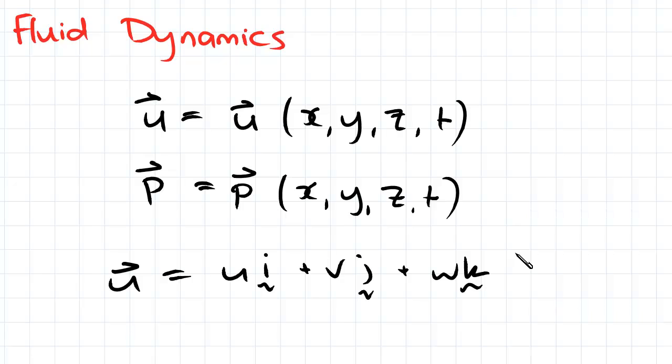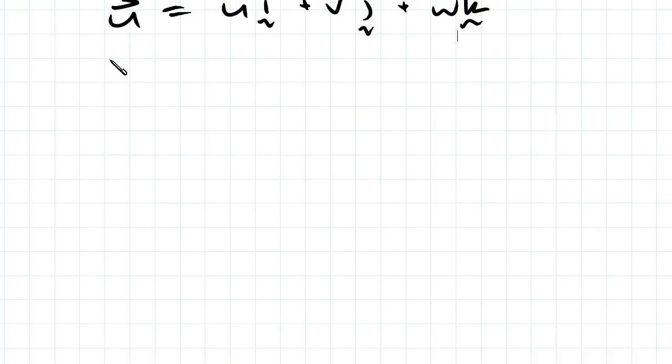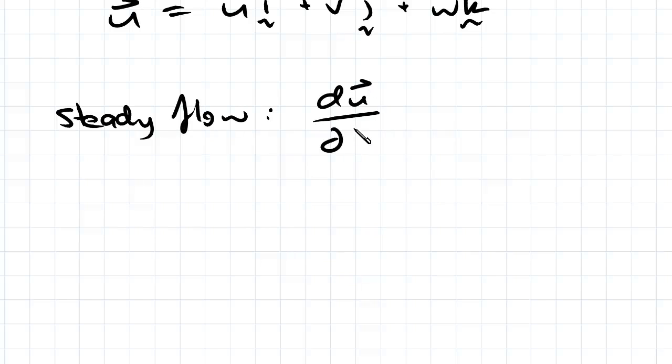In reality velocity is dependent on time as well, but in most cases we'll be considering in this course, it is correct to assume that velocity doesn't change with time and we term this a steady flow. The condition for a steady flow is that the derivative of velocity with time equals zero.